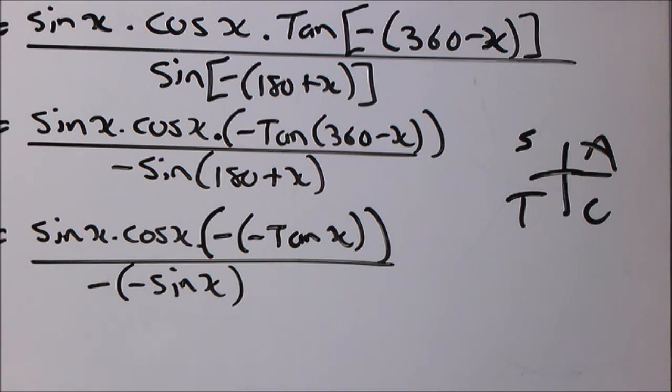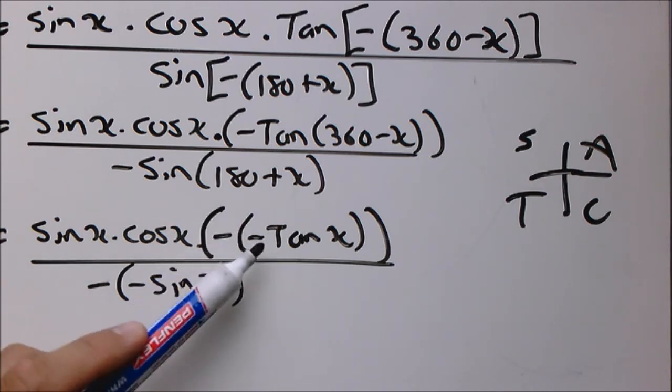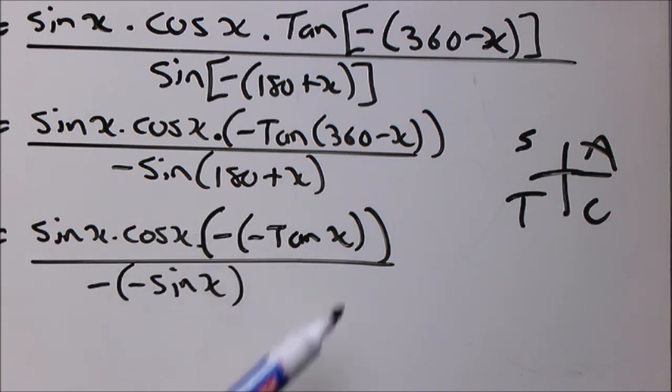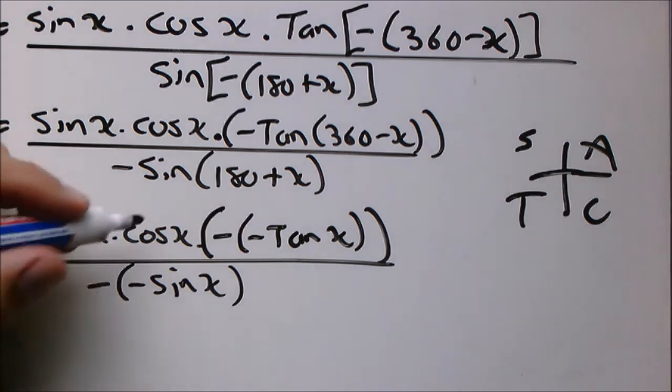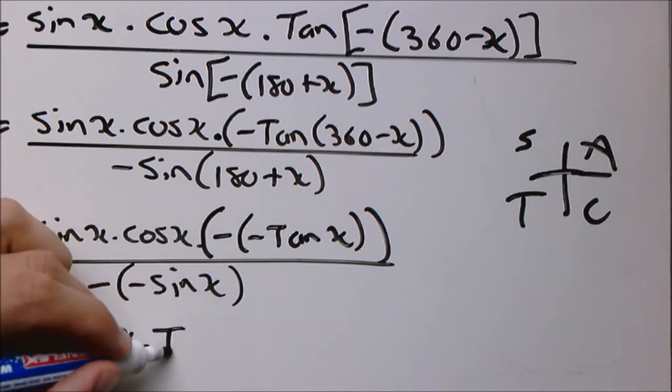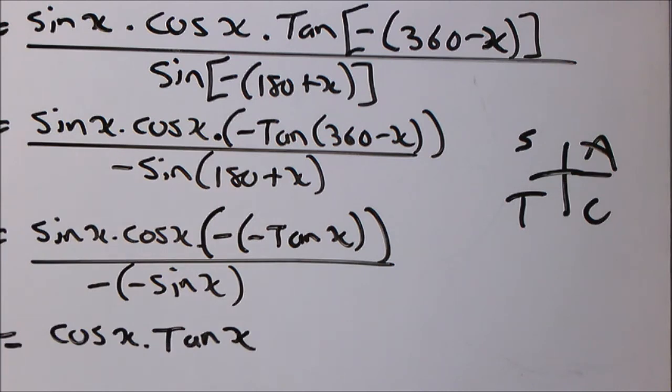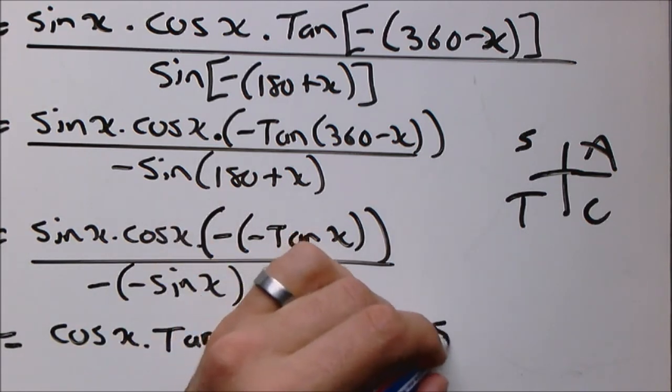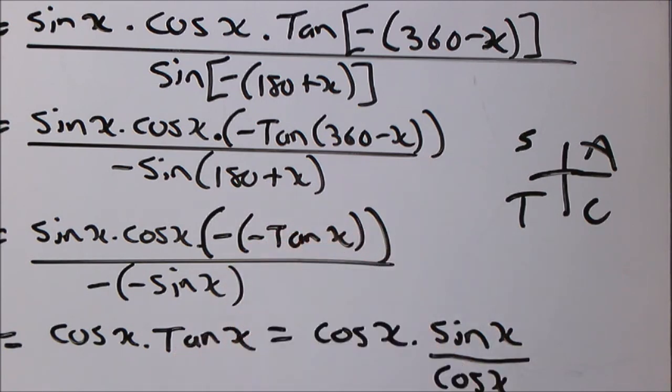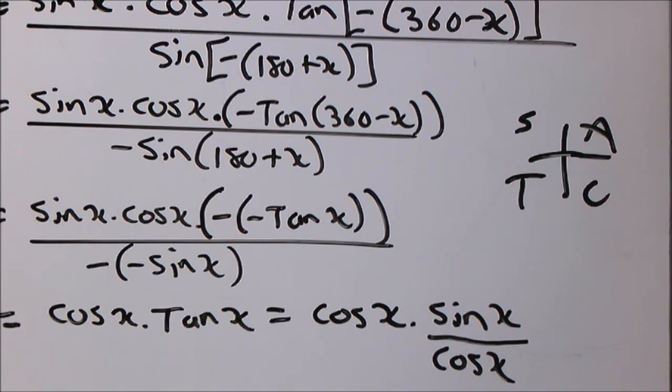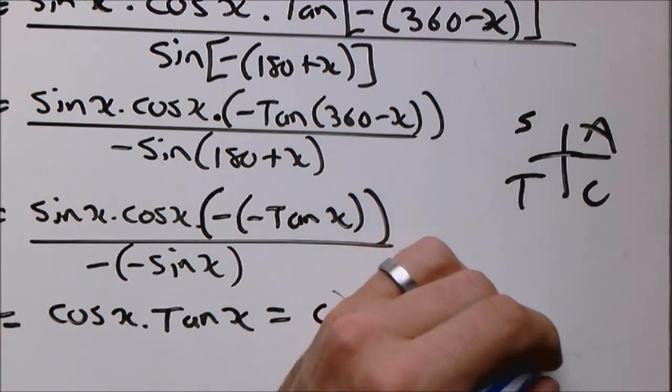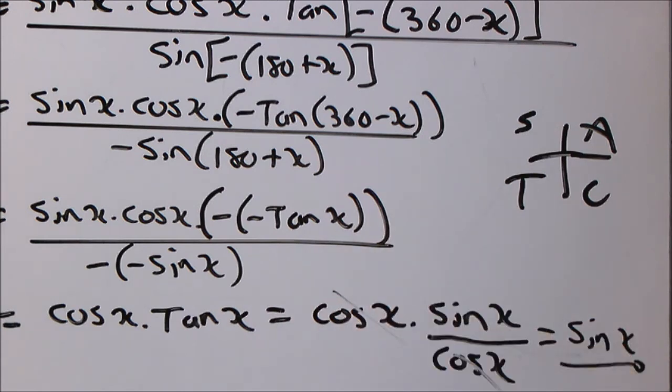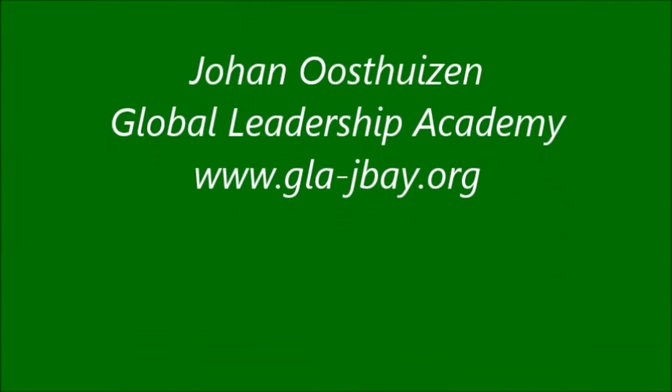So that becomes a positive tan x. Remember it's still multiplication, it's just one single term. This becomes a sine x. The sine x is cancelled out. So what you will have left is cos x times tan x. You use your quotient identity to change your tan x to sin x over cos x. They cancel out. Final answer sin x. The answer is sin x.